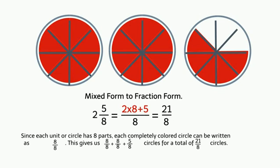Since each unit or circle has 8 parts, each completely colored circle can be written as 8 eighths. This gives us 8 eighths plus 8 eighths plus 5 eighths circles for a total of 21 eighths.